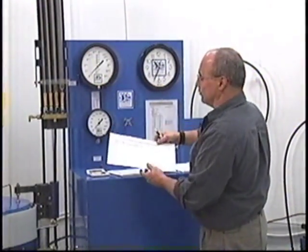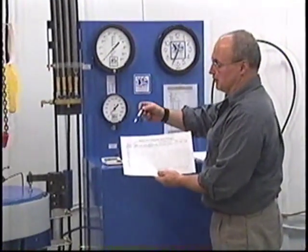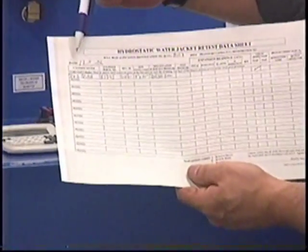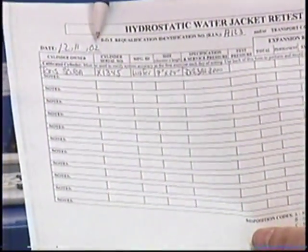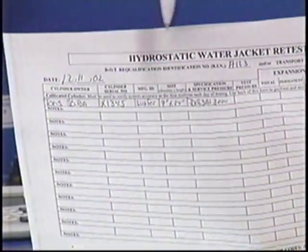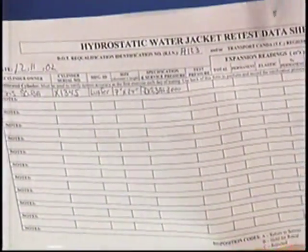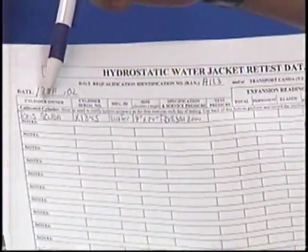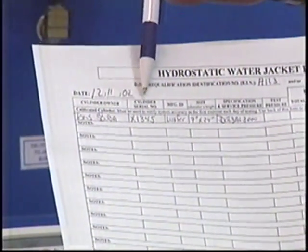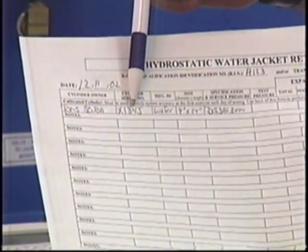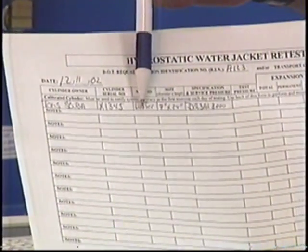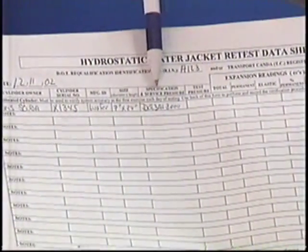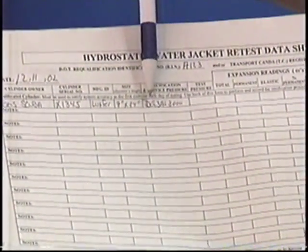The test record form must be filled out for each and every cylinder that you are testing that is DOT or Transport Canada rated. The date corresponding to your verification form, your DOT number or your Transport Canada number, the cylinder owner, the serial number of that cylinder, the manufacturer's ID, the size, which is diameter by length, and the specification service pressure.